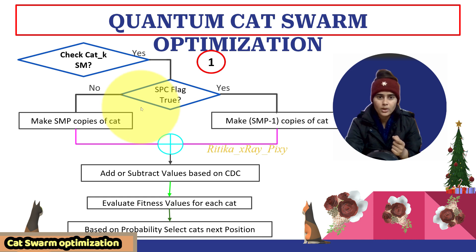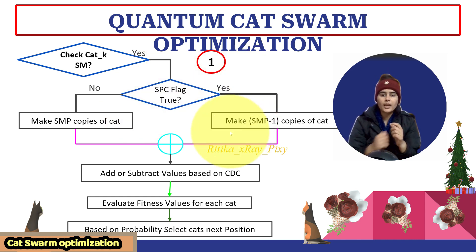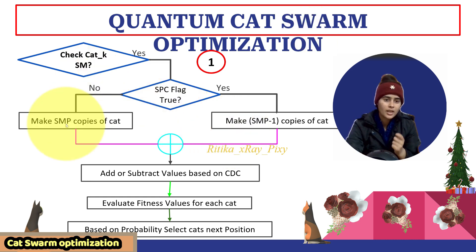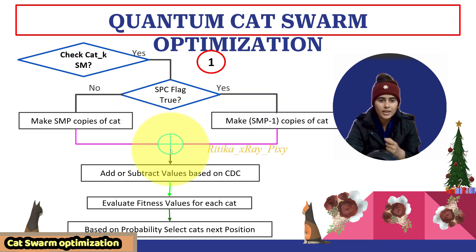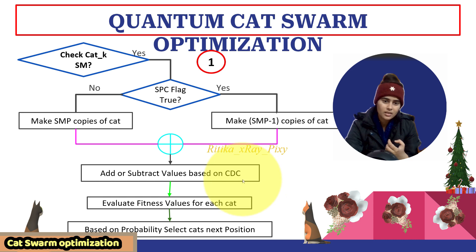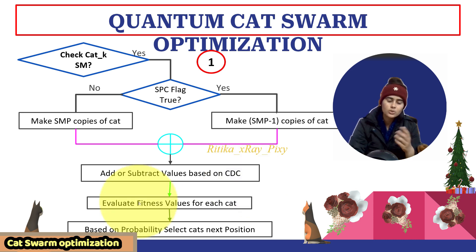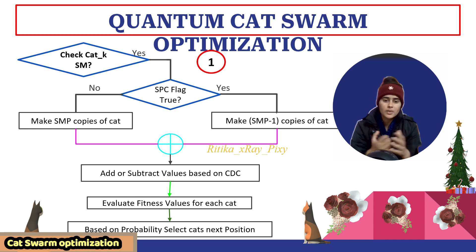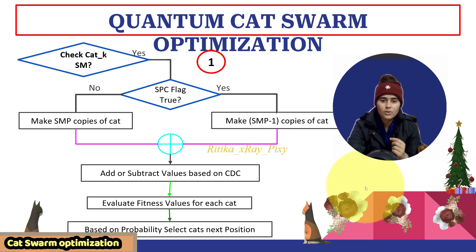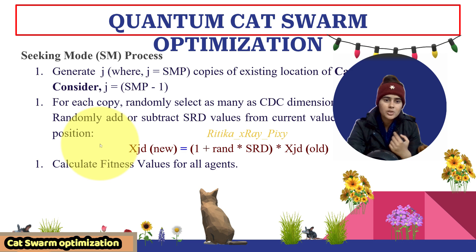After that, we will check whether the cat is in seeking mode or tracing mode. If the cat is in seeking mode, we will check the SPC flag — whether self-position considering is true or not. If it is true, we will make SMP minus one copies of the cat; else we will make SMP copies. After that we will combine and add or subtract values based on CDC, then calculate the fitness value for each cat and based on probability select the next position.